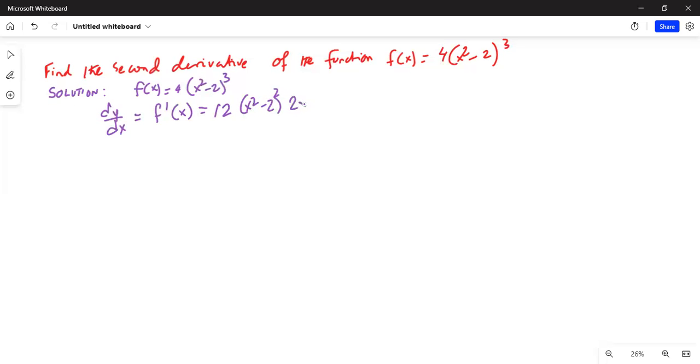So this is equal to 24x times (x² - 2)². Now we are going to do the second derivative.